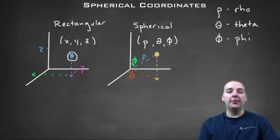Now what are these guys? How do rho, theta, and phi differ from x, y, and z? Well let's start with the rho. The rho is the direct distance from the origin out to your point.